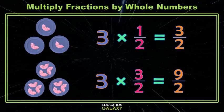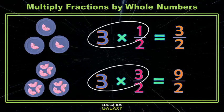Well, it has to do with the numerators. You'll see that our denominators stayed the same. But in our answer, the numerator is the product of our whole number and the numerator of our fraction.